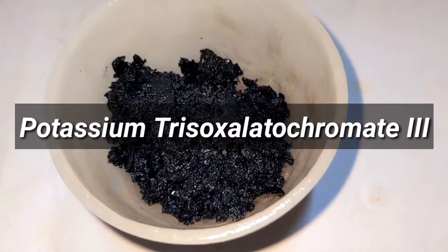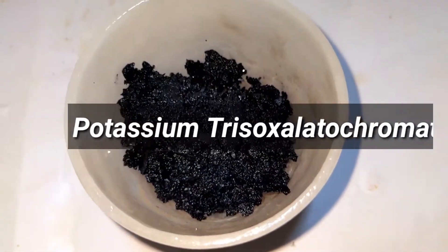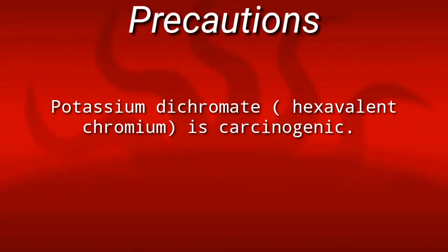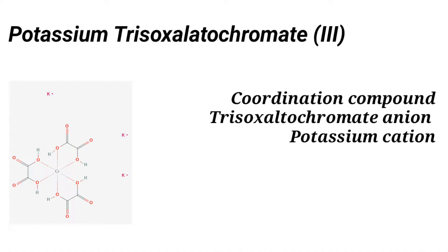In this video we will be preparing the coordination compound potassium trisoxalatochromate(III). This coordination compound contains the trisoxalatochromate anion, a very large complex anion with chromium in the +3 oxidation state surrounded by three bidentate oxalate ligands, counterbalanced by three potassium cations.